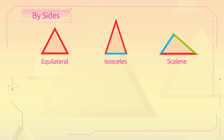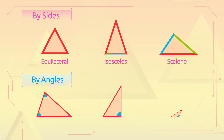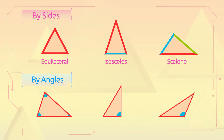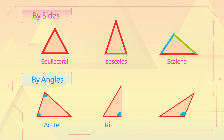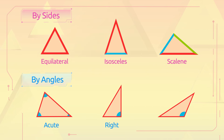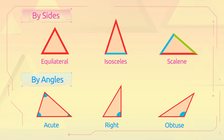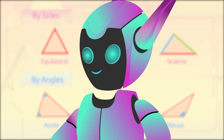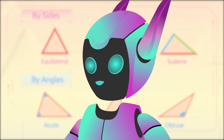Classifying triangles depending on their angles, we have: the acute triangle with three acute angles, the right triangle with one right angle, and the obtuse triangle with one obtuse angle. Now you know all the types of triangles — way to go!